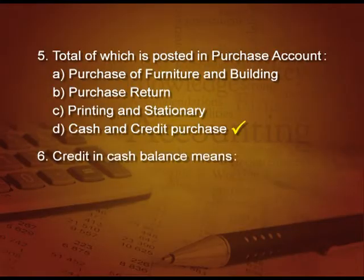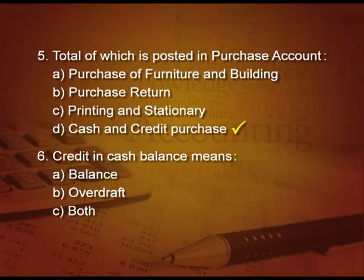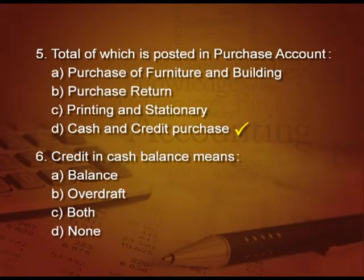Next question: credit in cash balance means — A there is a balance, B it is an overdraft, C both, D none. The answer is D — none — because there can never be a credit balance in cash. There can be a credit balance in bank only.